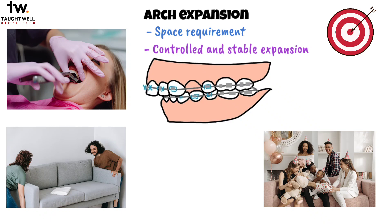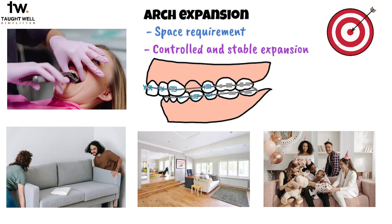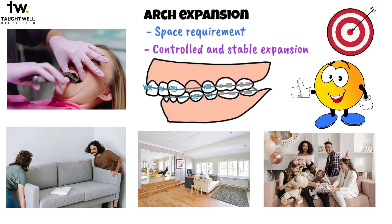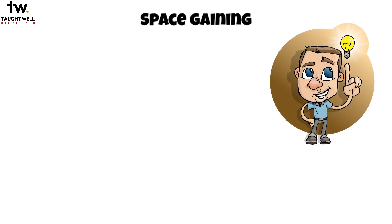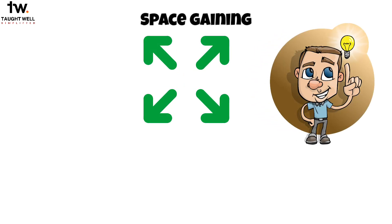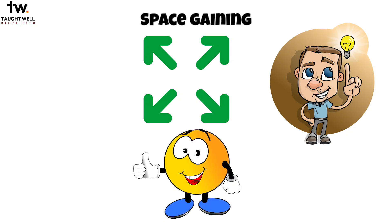By employing these methods of gaining space, you transform the small room into a beautifully organized and welcoming space for your party guests. Similarly, in orthodontics, these methods help create ample space within the jaws, allowing teeth to align properly and achieve a stunning smile. Whether you are organizing a party or undergoing orthodontic treatment, gaining space is all about making smart adjustments, expanding when necessary, and creating a harmonious environment for everything to fall into place.